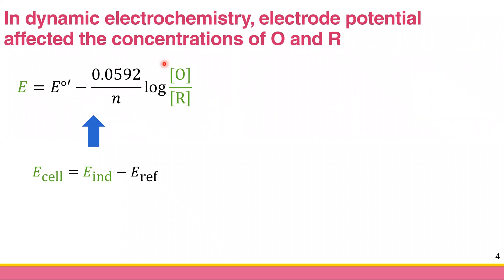For dynamic electrochemistry, we can do the opposite: we control the potential, applying it to change the concentration of the oxidized or reduced species. If we can change E, then we can change O and R subsequently. That's the central idea of dynamic electrochemistry — controlling the electrode potential to affect the concentrations of O and R.